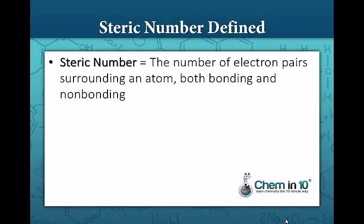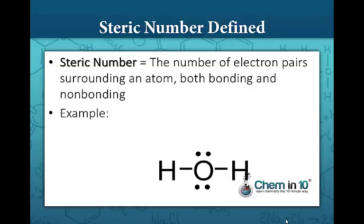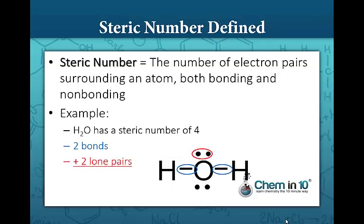Steric number is defined as the number of electron pairs surrounding an atom, both bonding and non-bonding. So for example again in water we have two bonds and we have two lone pairs for a total steric number of four.